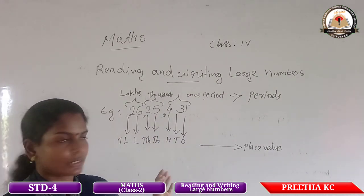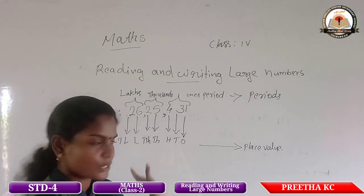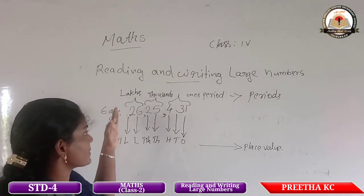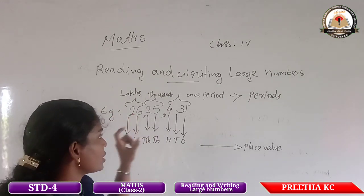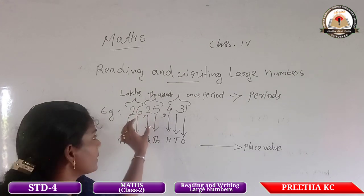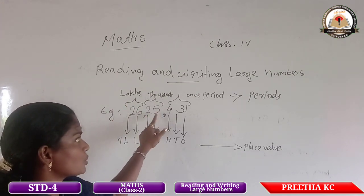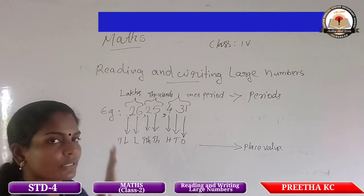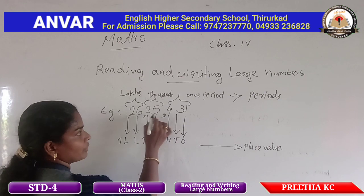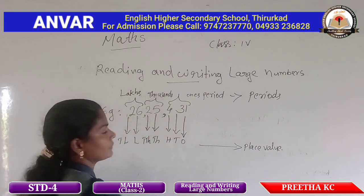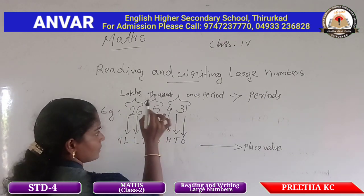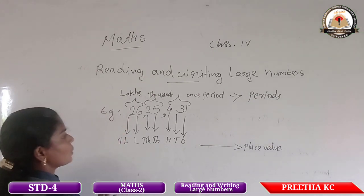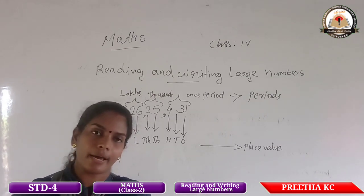As per this classification, how do we read this large number? It is very simple by dividing into periods. We start reading from the left side, from the lakhs period. Each digit in a single period is read together. So the reading is: twenty-six lakh, twenty-five thousand, four hundred thirty-one. This is the method of reading and writing large numbers.